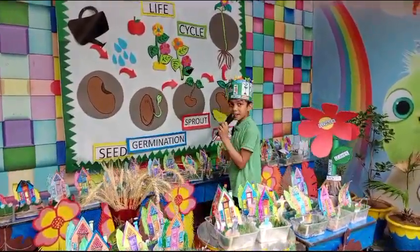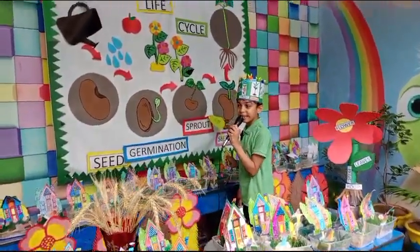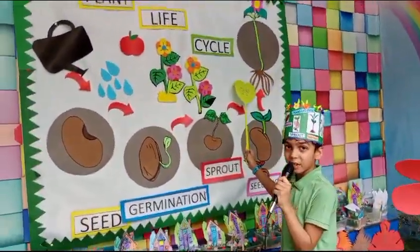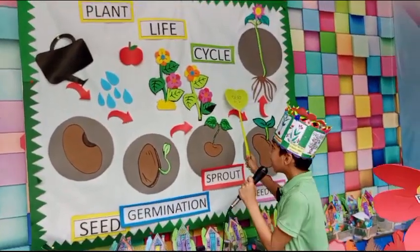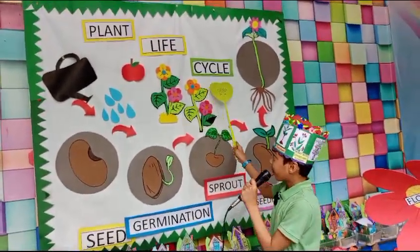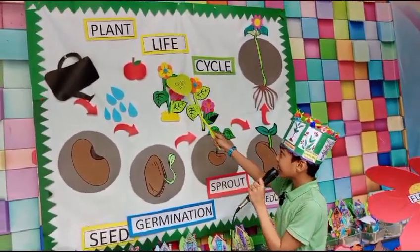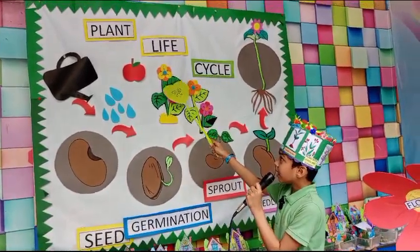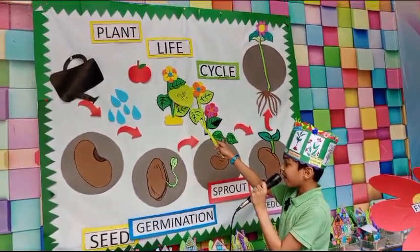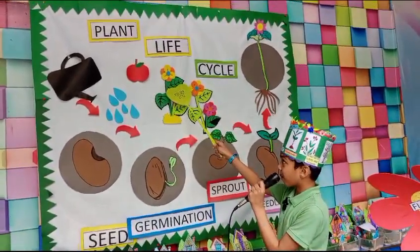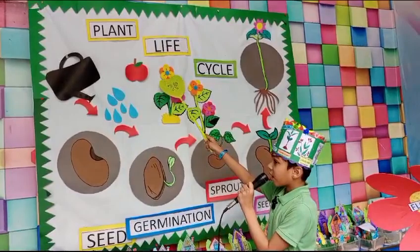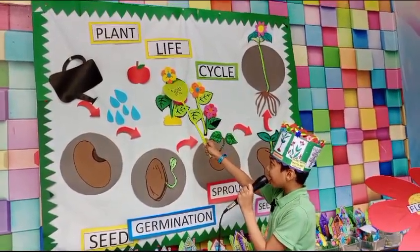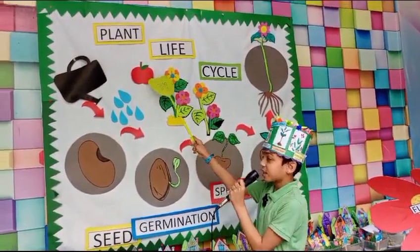the sprout is going to come into a seedling, and the seedling is going to come into a big plant. Please add flower glue on the big plant. Please create food for the plant. Flowers are then converted into foods.